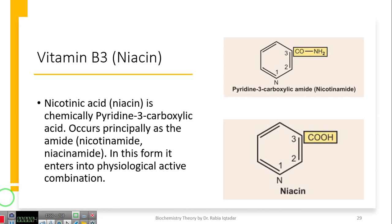Vitamin B3 which is also called niacin. Niacin is a nicotinic acid. It means it has a carboxylic acid group attached in the ring position. Nicotinic acid is available in the body in the form of an amide. You can see here that niacin is the basic vitamin, vitamin B3 which we can intake in our diet. And in the body it exists as pyridine-3-carboxylic amide. Carboxylic acid amide group, which is called as nicotinamide. In this form, it enters into the physiological active combination.